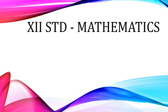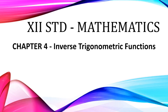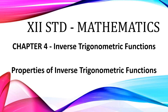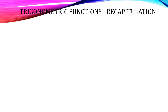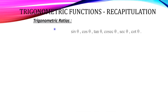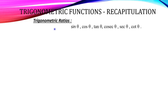Good morning students. This is math session, 12th standard, Chapter 4: Inverse Trigonometric Functions — Properties of Inverse Trigonometric Functions. Before seeing the properties, first recall the trigonometric functions. The trigonometric ratios are sin θ, cos θ, tan θ, cosecant θ, secant θ, and cot θ.